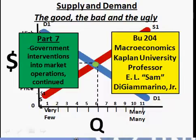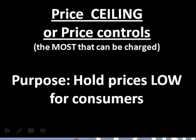Welcome back, folks, to Part 7. You might remember that in Part 6 we started looking at government interventions and how they affect the market. We looked at the price floor, where you could not lower the price below that level — you had to charge at least that level — and it was above the equilibrium level. Now we're going to look at the opposite situation.